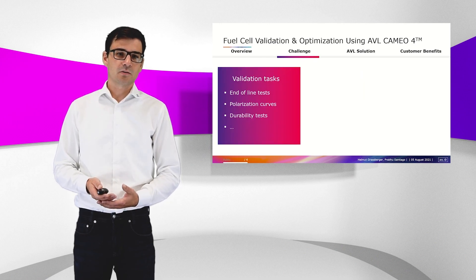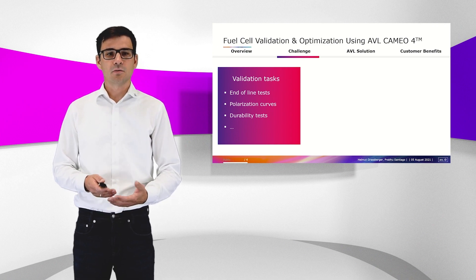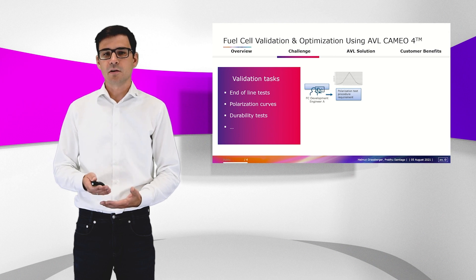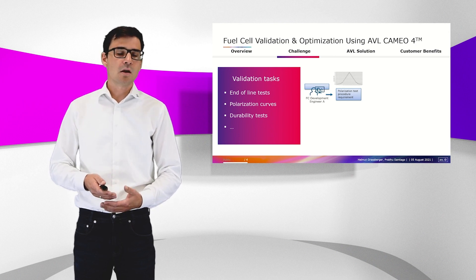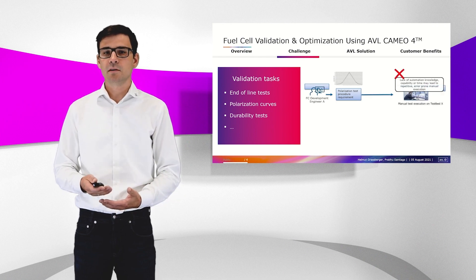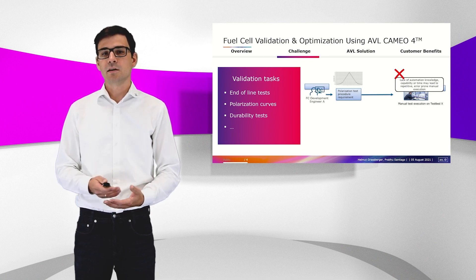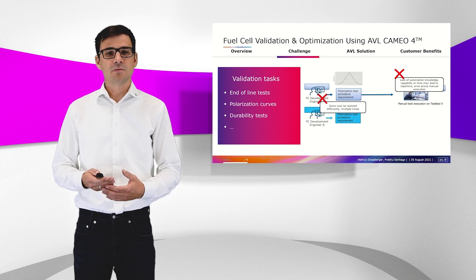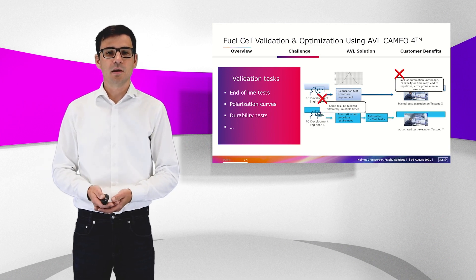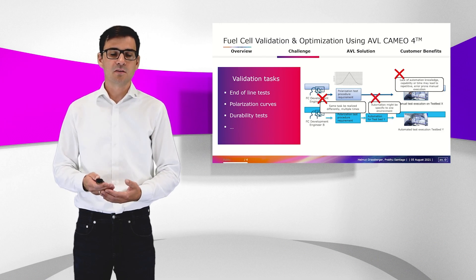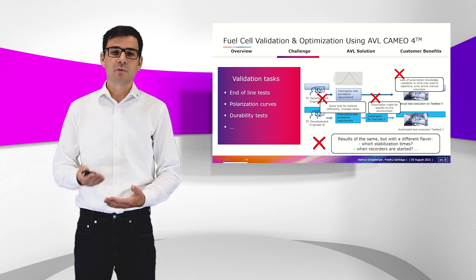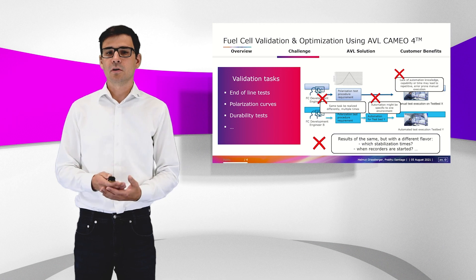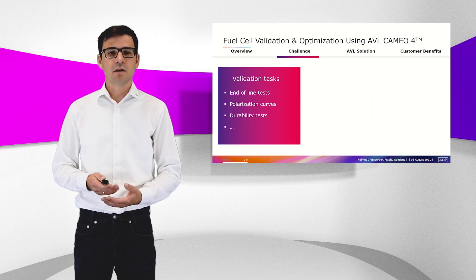Not only optimization tasks — there are also challenges in validation tasks such as end-of-line tests, polarization curves, or durability tests. There is the possibility that a development engineer wants to have a polarization curve tested and does this manually, maybe because of the lack of time to automate it or lack of knowledge. Then another engineer wants the same task but does it differently — with automation, but specific to his testbed. In the end, there are different results with different stabilization times and recording start points. So how can we standardize this process?